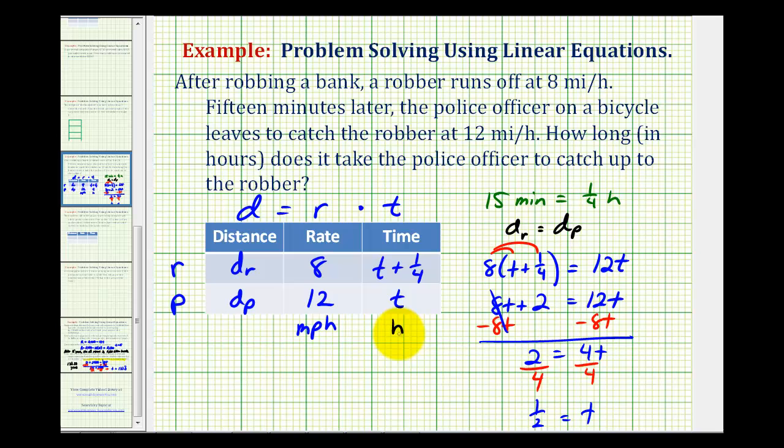Notice that t is the time that the police officer is riding his bicycle. So it will take 1 half of an hour for the police officer to catch the robber. Of course half an hour is equal to 30 minutes, but they do ask for the time in hours.